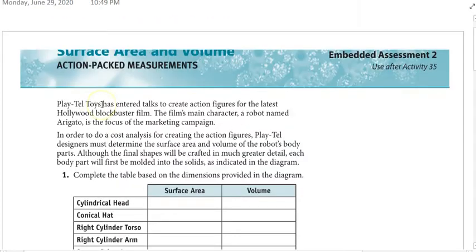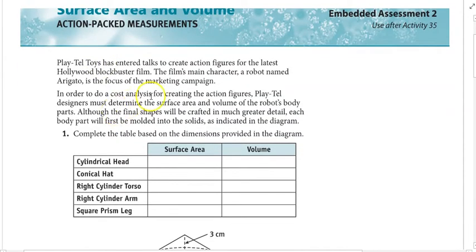Hello, welcome back. Mr. Munyon here with Unit 5 Embedded Assessment 2 after Activity 35. This is just practice with surface area and volume of some 3D shapes, and you do have a couple questions on density at the end.